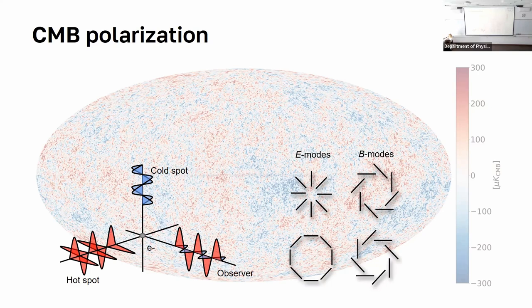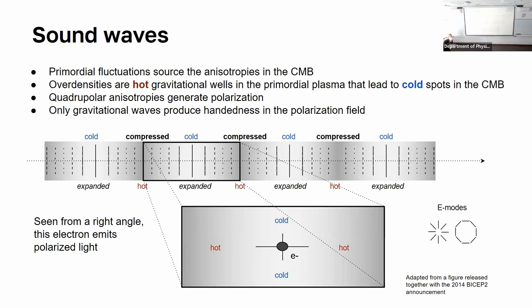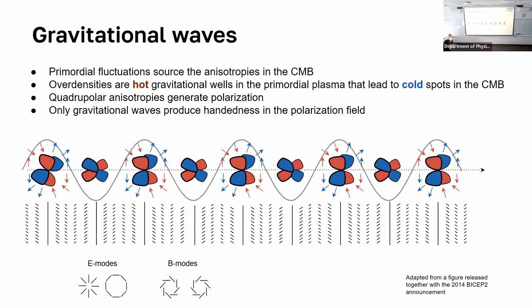E-mode polarization is produced by acoustic waves in the earliest years of the universe — just contraction and expansion. Because you get areas of cold matter sandwiched between hot matter, you get linear polarization. However, B-mode polarization — I won't get into the specifics, frankly, because I don't fully understand them myself — is specifically indicative of gravitational waves in this early universe.